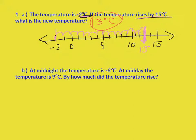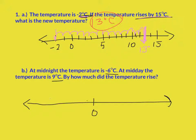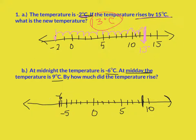Next one. At midnight, the temperature is negative 6 degrees, and at midday the temperature is 9 degrees. By how much did it rise? So here's my number line — I've got a negative number and these are actual temperatures. I'm going to put my 0 in the middle. I've got negative 6, and I always like to mark my 5s. This is negative 5. At midday the temperature is 9 degrees Celsius, so my 9 is right here. These are my two temperatures that I'm going between, and it asks how much it is rising.